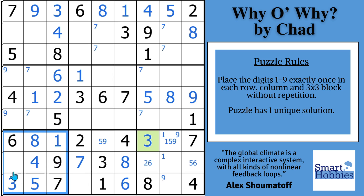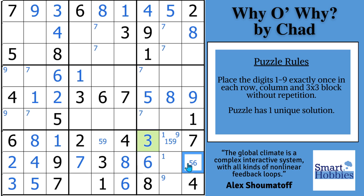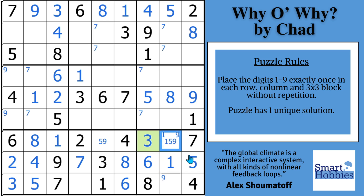Only digit left here — full house — so we can solve that. A two allows us to solve for the six and the five right there. With these two ones we can solve for the one right here, and with the five, this has to be your nine and that's going to be your five.